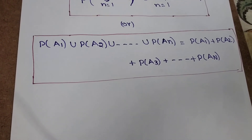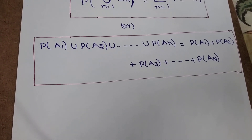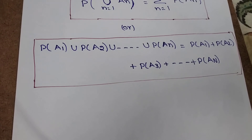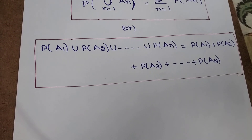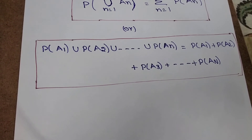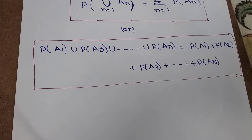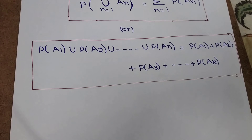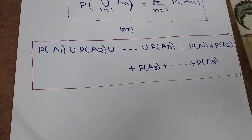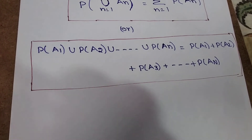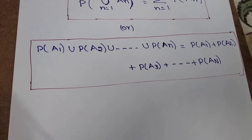Next, if A and B are two mutually exclusive events, then P of A union B equals P of A plus P of B.